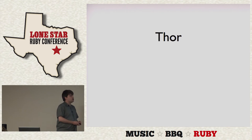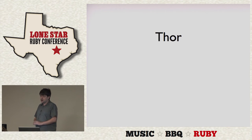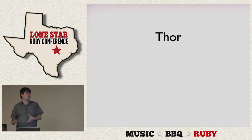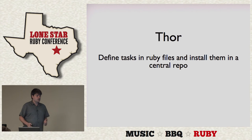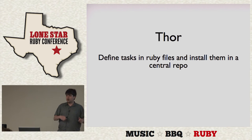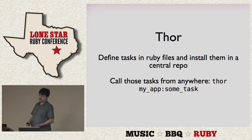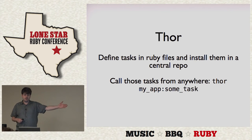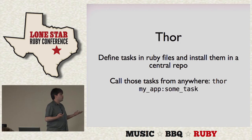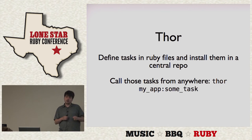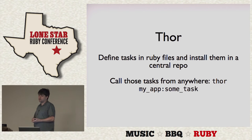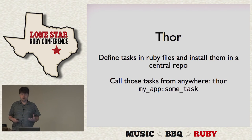The last little bit is this thing called Thor, which is not really about building a command line app but about running code from the command line. You basically define tasks in Ruby files and tell Thor to install them into a central repository, and then anywhere else in the system you can run these tasks using the names you used to install your code. Which is not exactly making a command line app, but it is a very expedient way to make functionality available throughout the system.